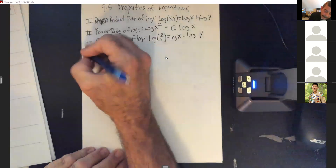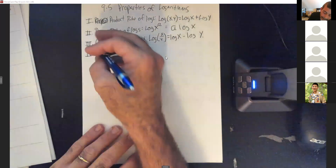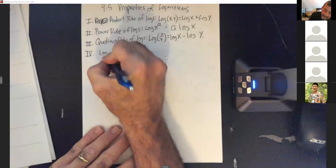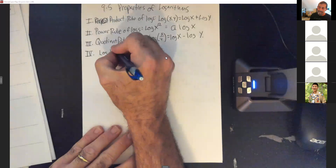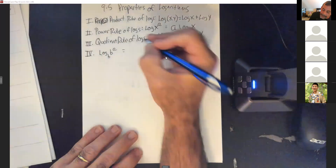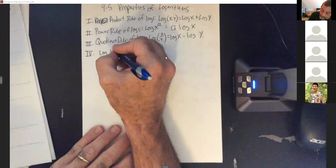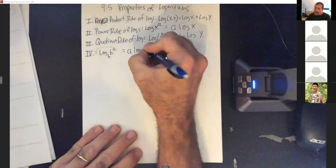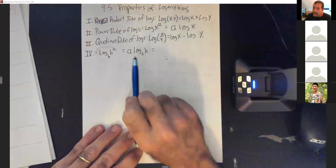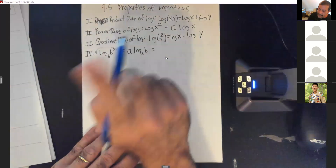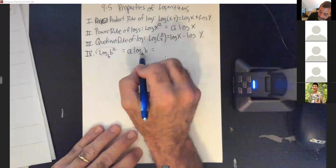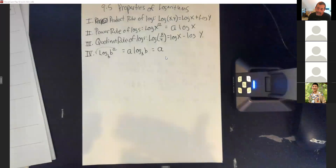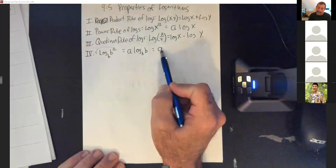The fourth property: log base b of b raised to some exponent a. First, bring the a down using the power rule — that gives you a times log base b of b. But log base b of b equals 1, and a times 1 is just a. So log base b of b to the a equals a.